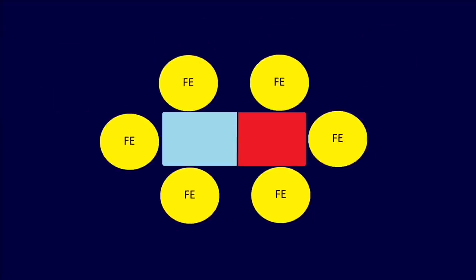Then we have ferromagnetism. Ferromagnets are the type of magnets which are associated with iron, cobalt, and nickel attraction.